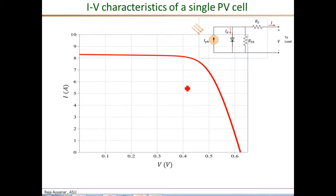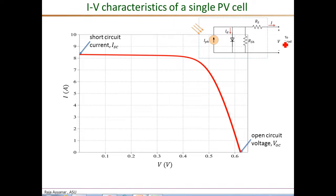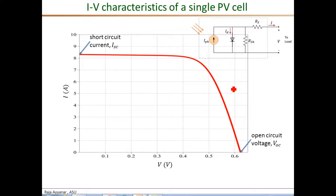Two points of main interest in the I-V characteristics: one is the short circuit current, which is the current when the terminals are shorted and V is zero; and the other point is the open circuit voltage, when the terminals are open-circuited and the current is zero, resulting in the maximum voltage VOC. This plot corresponds to just one particular operating condition corresponding to a given solar irradiance, a given temperature, and for given values of the PV cell parameters — mainly the parasitic resistances and the ideality factor A. In this video, we are going to focus on how these various environmental factors as well as these parameters affect this I-V characteristic.